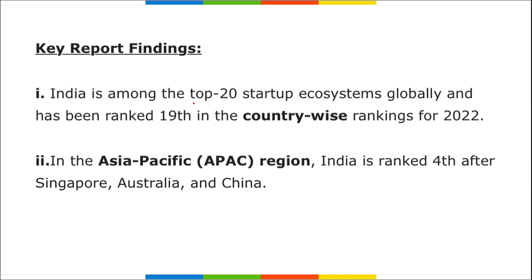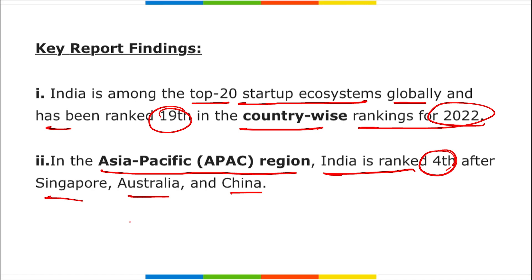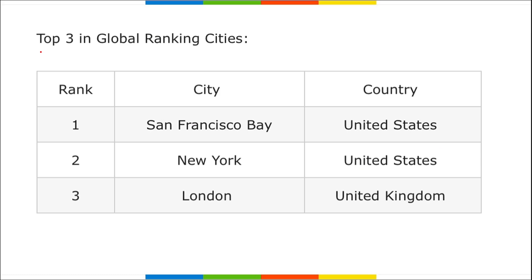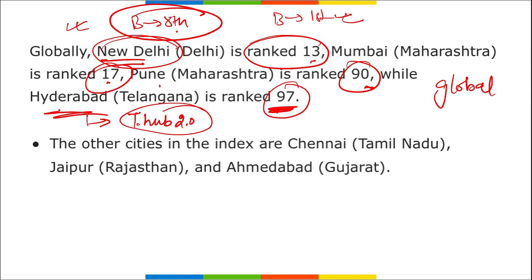India is among the top 20 startup ecosystems globally, ranked 19th in country-wise ranking for 2022. In the Asia-Pacific region, India is ranked fourth after Singapore, Australia, and China. India also has the third-largest number of unicorns in the world. In city rankings: Bangalore is 8th, New Delhi 13th, Mumbai 17th, Pune 90th, and Hyderabad 97th globally.